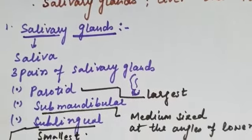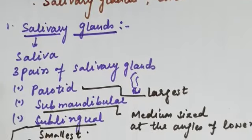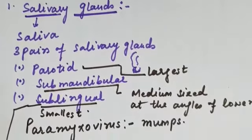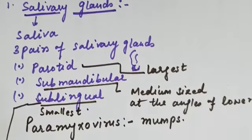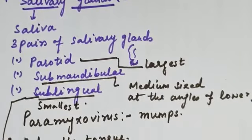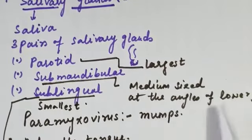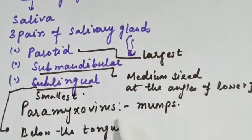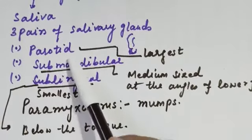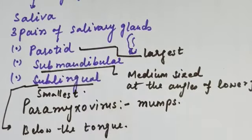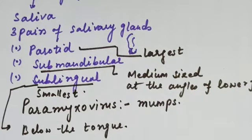To summarize: we have three pairs of salivary glands, six total. Parotid is the largest, present in front of and below the ears. Submandibular is medium-sized, present at the angles of the lower jaw. Sublingual is the smallest, present below the tongue. Paramyxovirus infects the parotid gland and causes mumps.